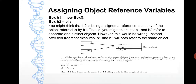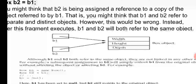You might think that b2 is being assigned a reference to a copy of the object referred to by b1 — that b1 and b2 refer to separate and distinct objects. However, this would be wrong. After this fragment executes, b1 and b2 will both refer to the same object. You can see this on the image: b1 and b2 are both referring to the same variable location — width, height, and depth — the three variables of type double inside class Box.